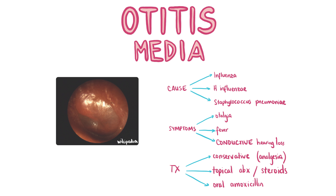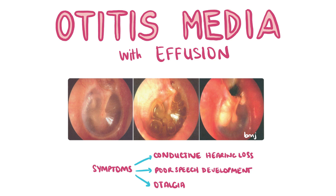In acute suppurative otitis media, the patient will present with a history of gradually worsening ear pain or ear tugging in children, with sudden appearance of discharge preceded by a popping sensation. On otoscopy there may be mucopurulent watery discharge in the ear canal and perforation of the tympanic membrane seen. It is managed in the same way as acute otitis media.